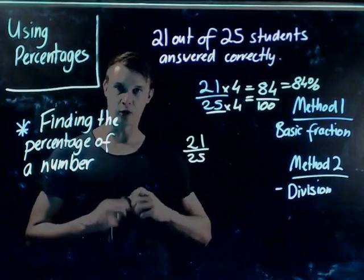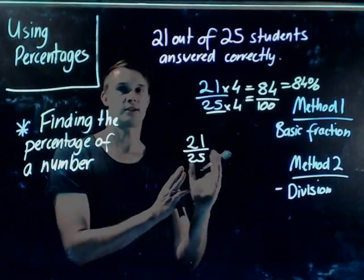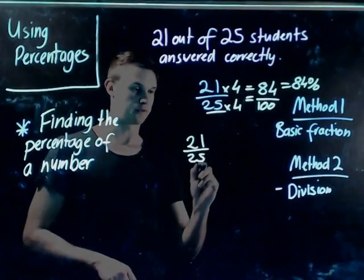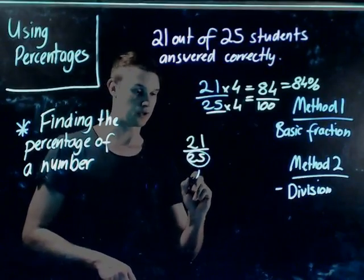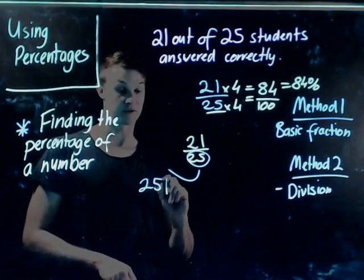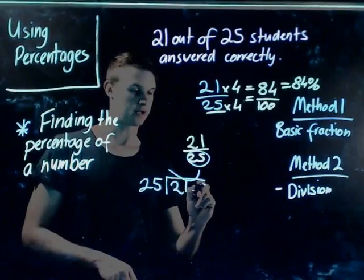So the way that I would set this out, make sure you follow this process. If I wanted to turn this into a percentage, I want to multiply 21 by 25. Now the denominator goes outside the long division, so I have 25 divided by 21. Now I add a decimal place and a decimal place and a decimal place and a zero.